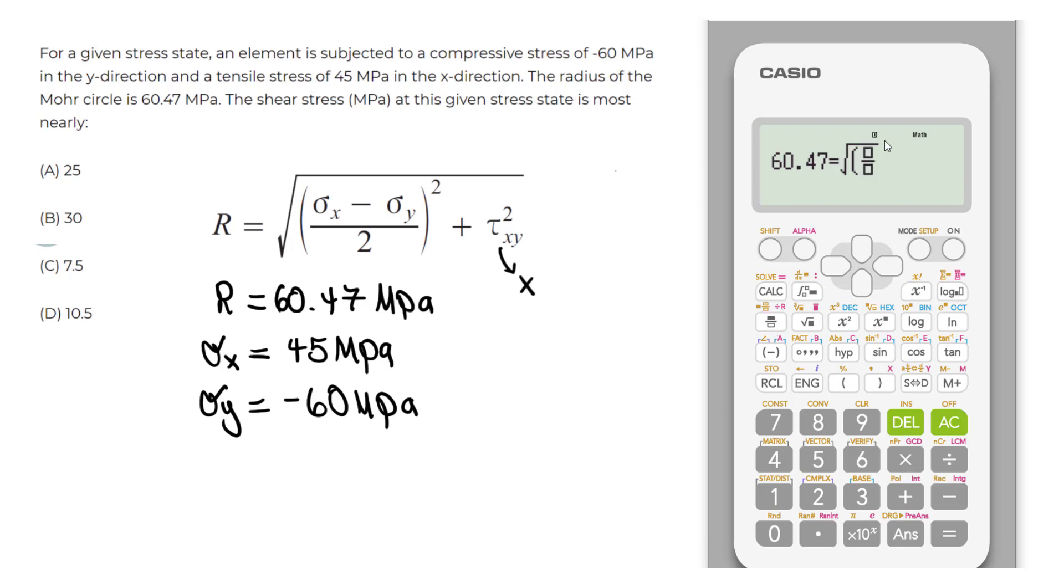So doing that, we have sigma x. Sigma x we know is 45. Then we do minus. So make sure you do that minus there.